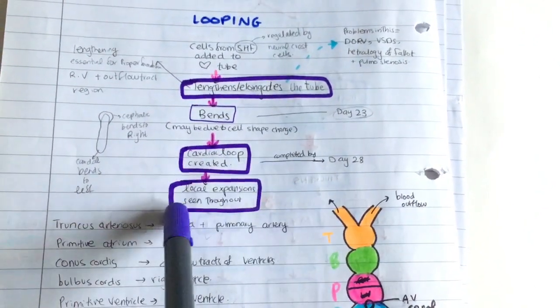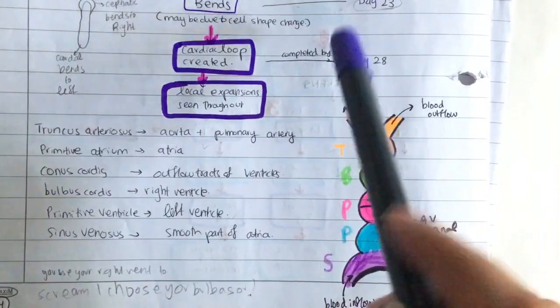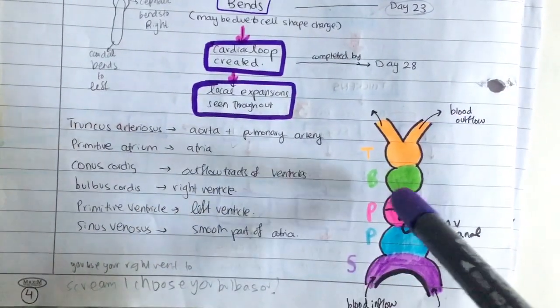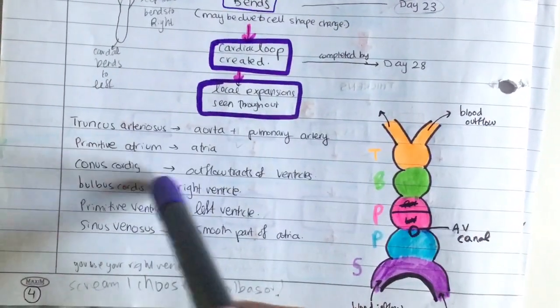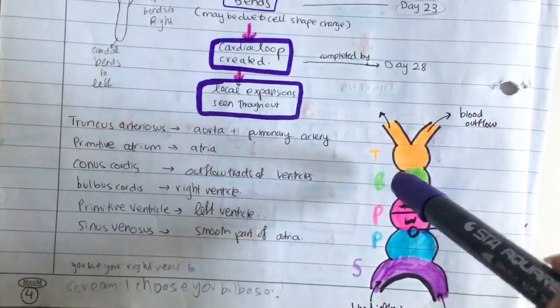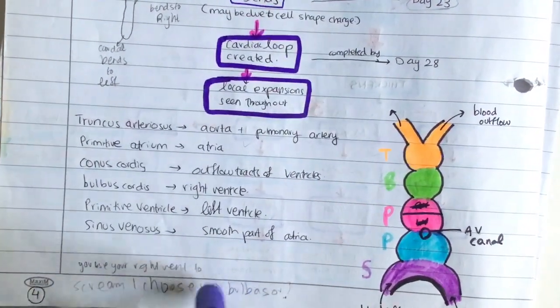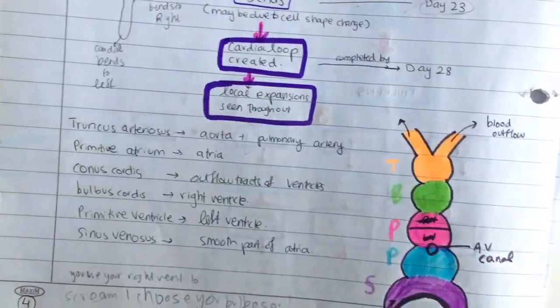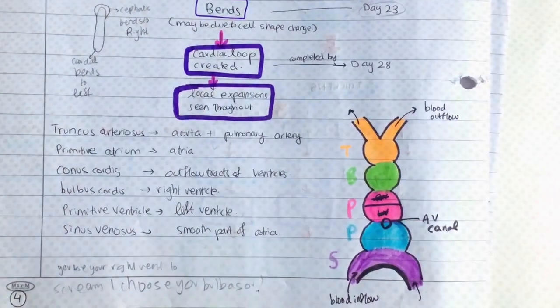Once the loop is created, you have some local expansions seen through it. Your truncus arteriosus forms the aorta and pulmonary artery. Your primitive atrium forms the atria. Conus cordis forms the outflow tracts of the ventricles. The bulbus cordis forms the right ventricle, and I use a very lame mnemonic: you use your right ventricle to scream out 'I choose you, Bulbasaur!' Use your right hand to throw the pokeball. If this helps stick this into your mind, then great. Otherwise, just ignore what I just said.